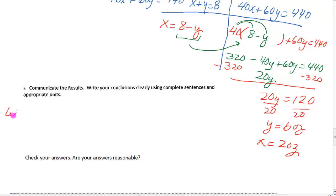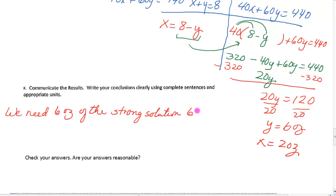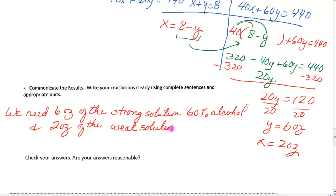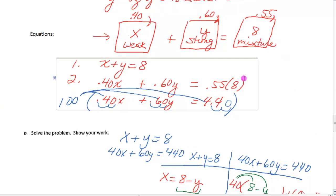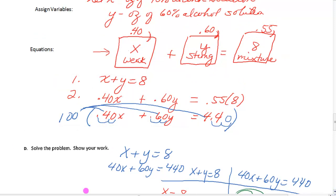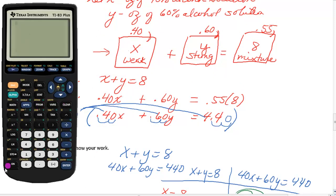Our results: we need 6 ounces of the strong solution (60% alcohol) and 2 ounces of the weak solution (40% alcohol). To check: 0.40 × 2 + 0.60 × 6 = 0.80 + 3.60 = 4.4 ounces of alcohol total — which matches 0.55 × 8 = 4.4. That checks out.